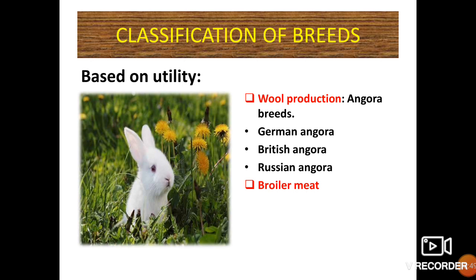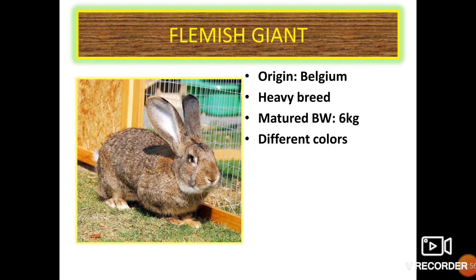The second classification is based on utility: wool production and broiler meat. For wool production, Angora breeds are used. The Flemish Giant rabbit has its origin in Belgium; it is a heavy breed with a matured body weight of 6 kg and is available in different colors.